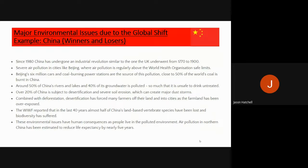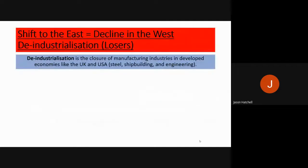China is a key example of a place with both winners and losers from the global shift. Since 1980, China has undergone an industrial revolution similar to the UK's in the 1700s and 1800s, but with severe consequences. We've seen severe air pollution in cities like Beijing, six million cars and coal-burning power stations, massive increases in coal consumption, polluted rivers and lakes, and soil erosion — all environmental issues with serious human health consequences such as lung and breathing problems.